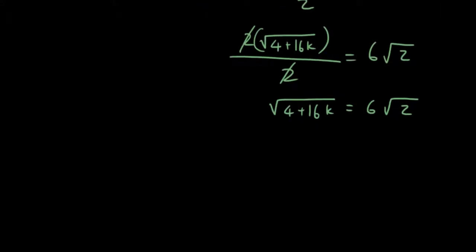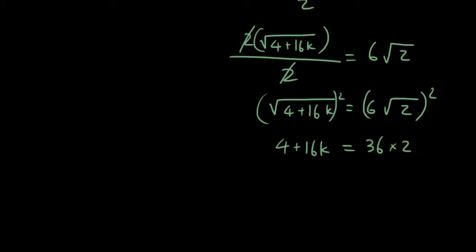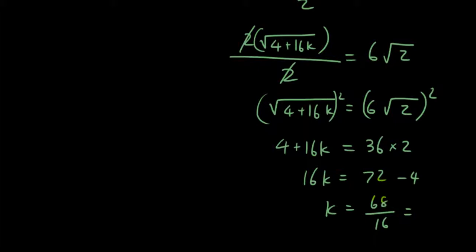Squaring both sides: 4 + 16k = 36 × 2 = 72. Rearranging: 16k = 72 − 4 = 68, so k = 68/16 = 4.25.